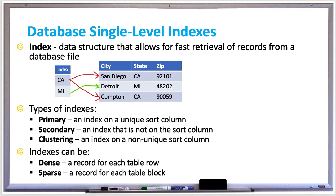There are three main types of indexes. A primary index is an index on a unique sort column. A secondary index is an index that's not on the sort column. A clustering index is an index on a non-unique sort column. These indexes can be either dense or sparse — dense contains an entry for each table row, while sparse contains an entry for each table block.